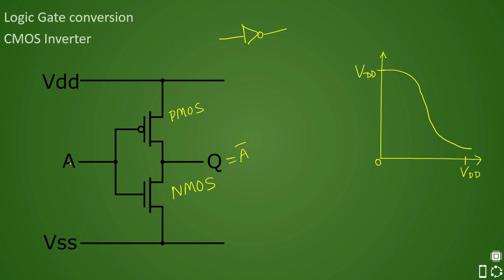When your input A is 0, your PMOS turns on and enters the linear region, so VDD flows to the output, making output high — logic 1. When A is 1, the PMOS is off and the NMOS is on. Whatever high voltage was present at the output gets discharged through the NMOS and turns to 0. So when input is high, output is low — that is why it is an inverter.